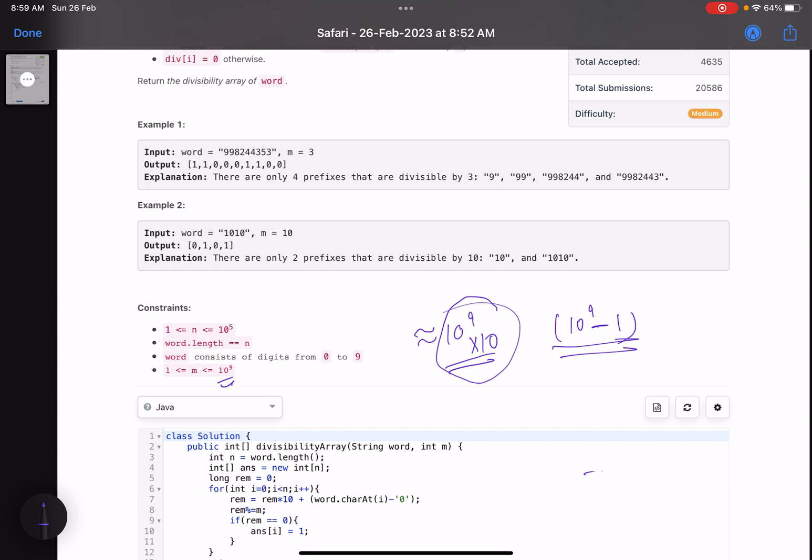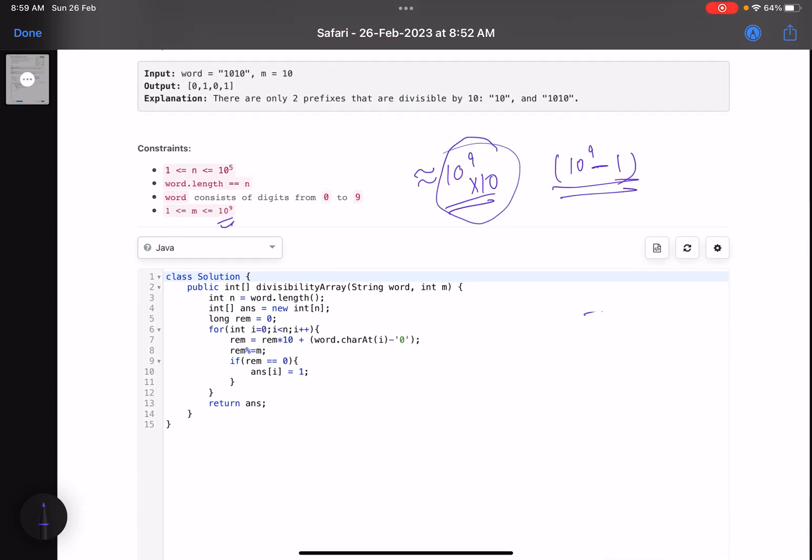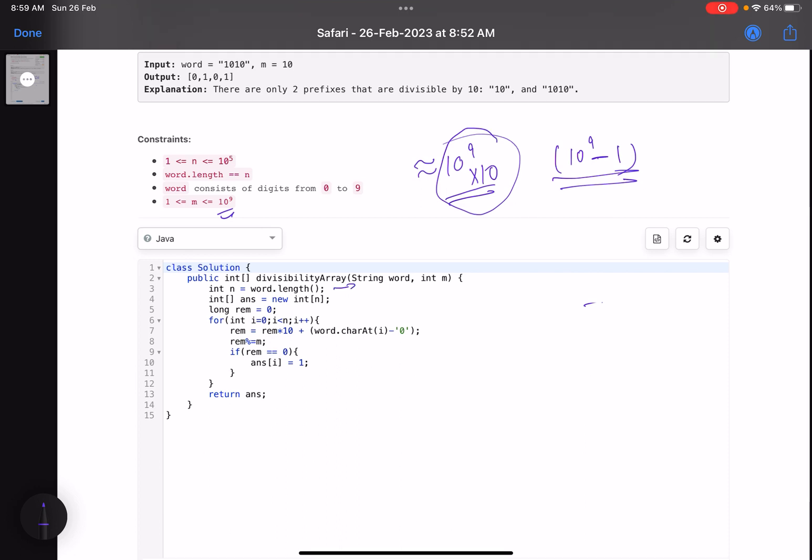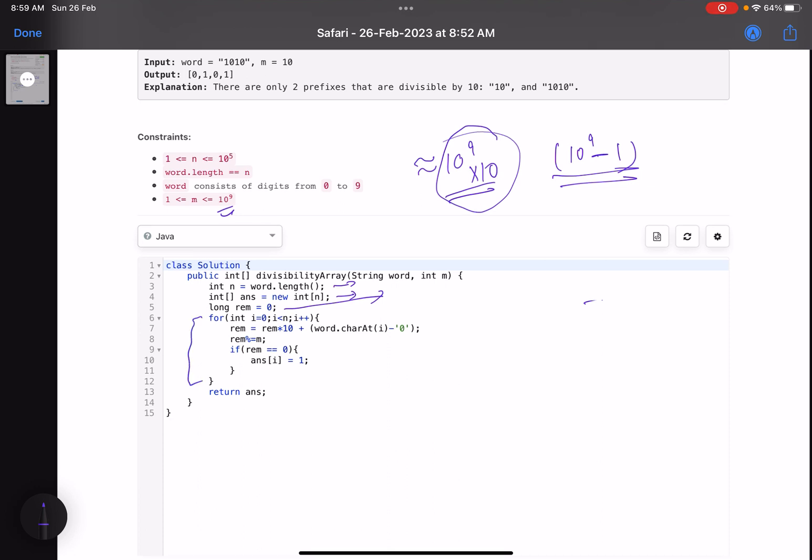Now if I come to the code, you can see it's a very short code. You calculate how many characters you have, then construct the answer array. You initialize your remainder with 0 because obviously we do not have any digits till now, so the remainder will be 0. Then you traverse it. Just see the formula: remainder equals remainder into 10 plus the current digit. Find what is the current remainder, then remainder mod equals m. If the remainder is 0, answer[i] is 1, else obviously by default it is 0 when I construct the array. Finally you return your answer.